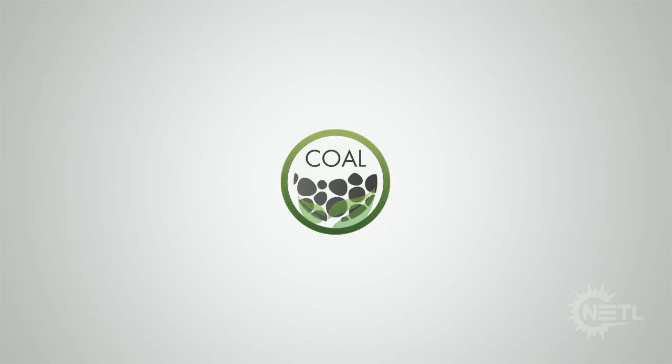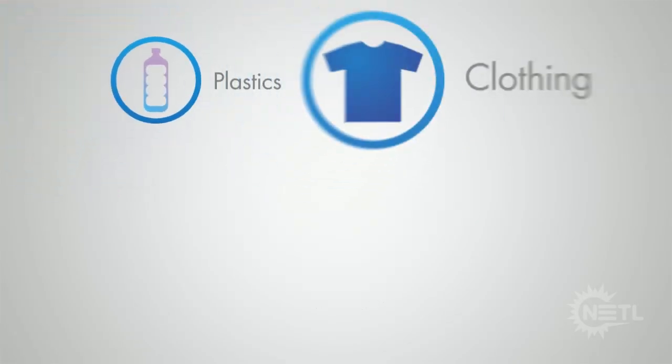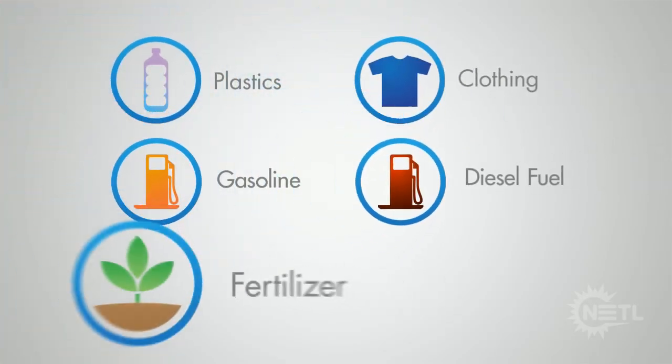Gasification allows coal, or even dried plants, to be transformed into many useful, everyday products in an environmentally friendly way, by breaking down coal into molecular building blocks that can be reassembled primarily with oxygen and water to make plastic, clothing, gasoline, diesel fuel, fertilizer, and electricity.